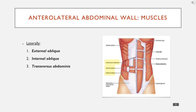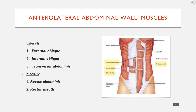Then transversus abdominis sits below those two and goes transversely. Medially we have the rectus abdominis, which is a strap muscle that goes from superior to inferior, and we have the rectus sheath.